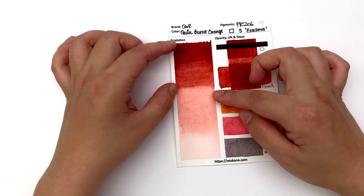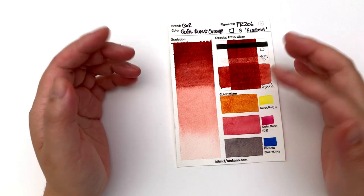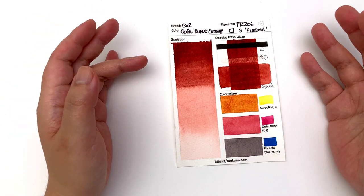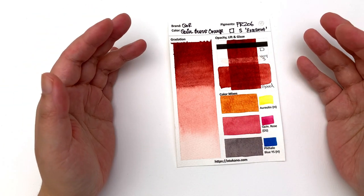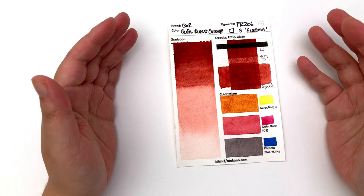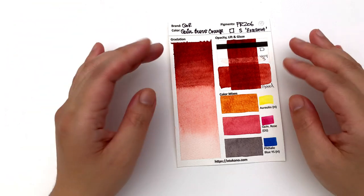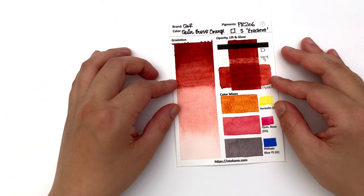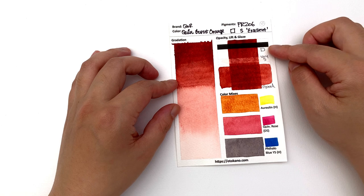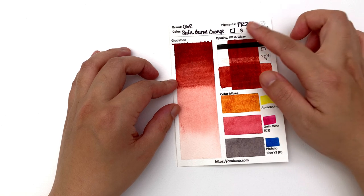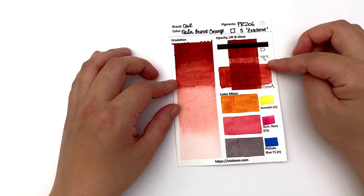But for a queen color it doesn't suffer from cauliflowering which is really good. It means it's a lot easier to handle than some of the other colors that we've seen in this series and just in general queens and thalos that tend to be prone to cauliflowering. It is classified as transparent and I would agree with that.